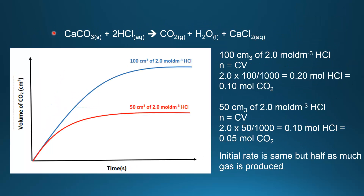Next, we're going to analyze some more rates of reaction graphs. All of these graphs were produced from this reaction: calcium carbonate reacting with hydrochloric acid to produce carbon dioxide gas, water, and calcium chloride. In all of the reactions, the hydrochloric acid was the limiting reactant.